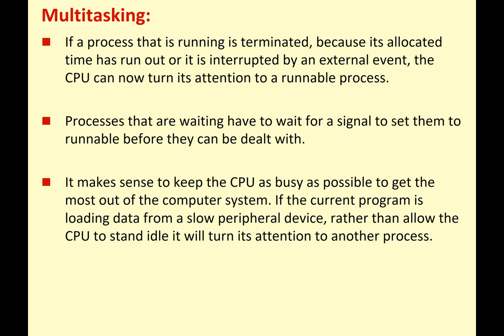If a process that is running is terminated because its allocated time has run out, or is interrupted by an external event, the CPU can now turn its attention to another runnable process. So again, if you close down the application or something like that, the operating system knows to switch the next process in.